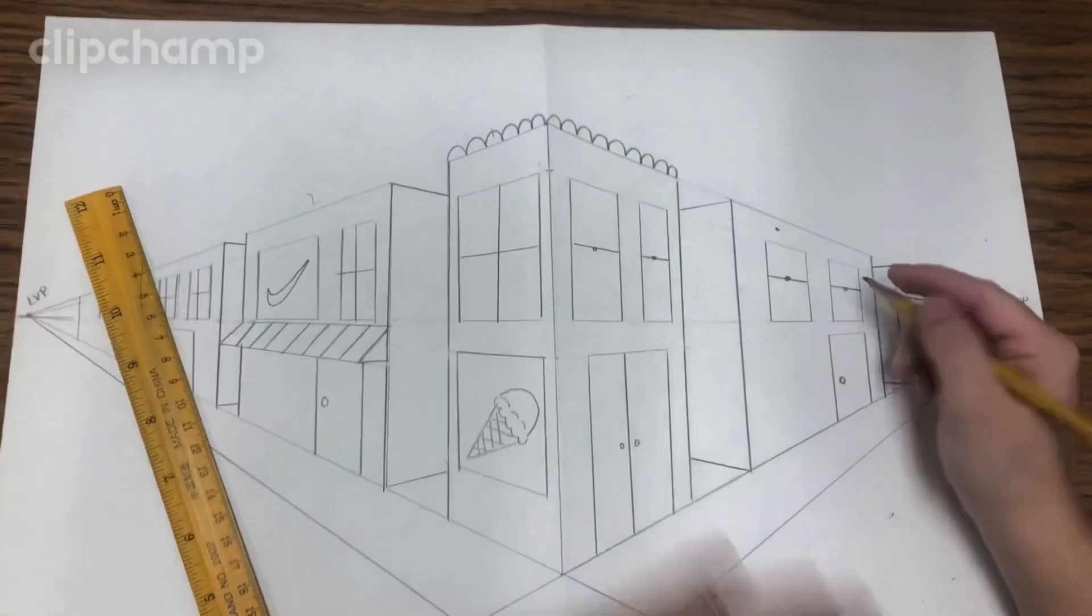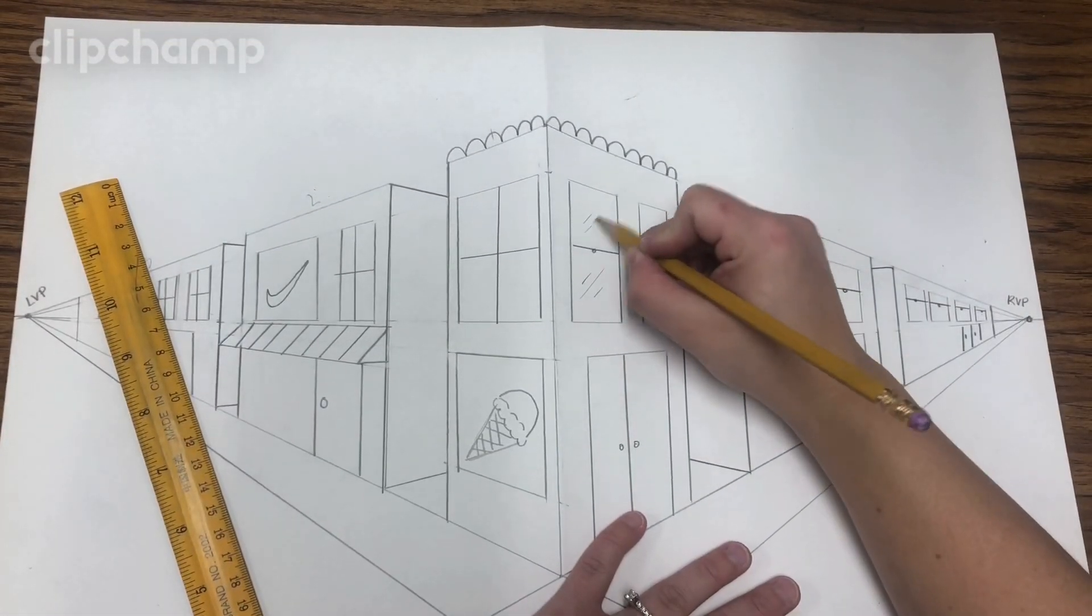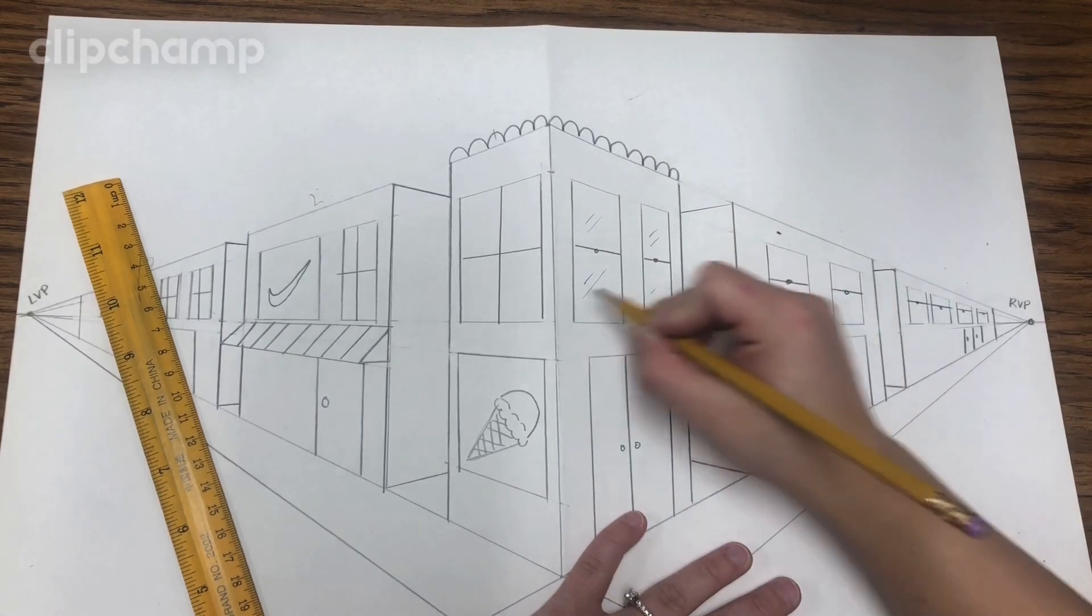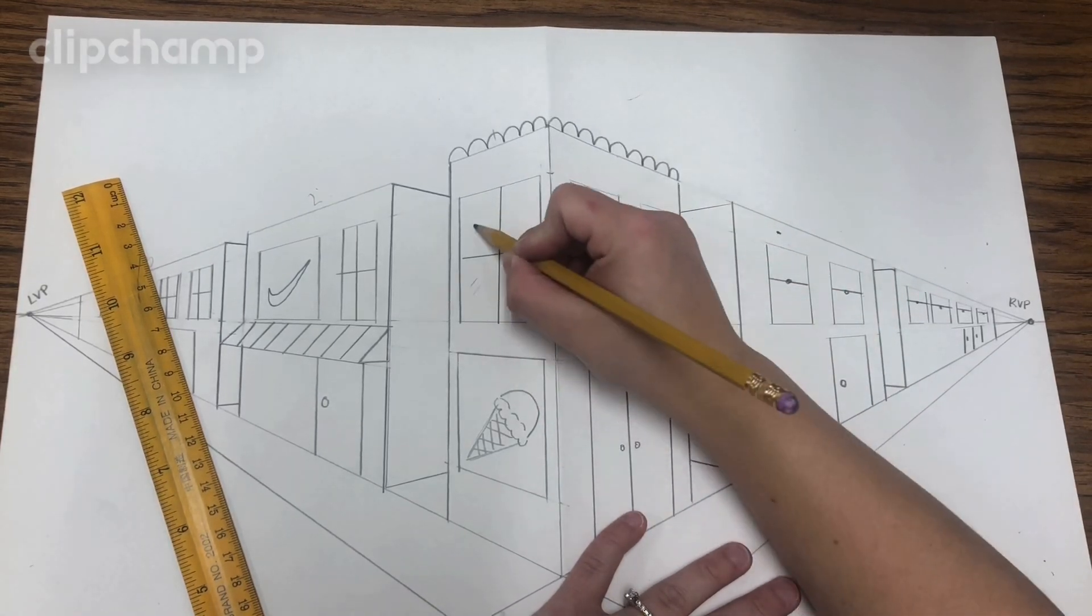I can always add some window to make it look like glass. So I just angle my lines.